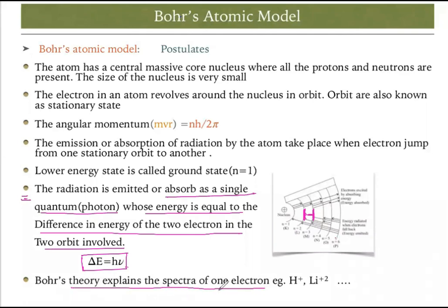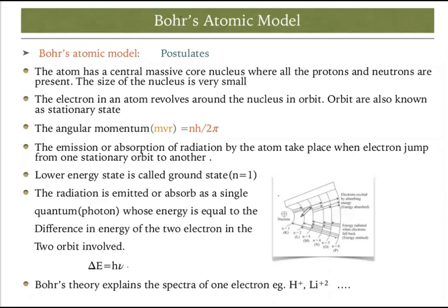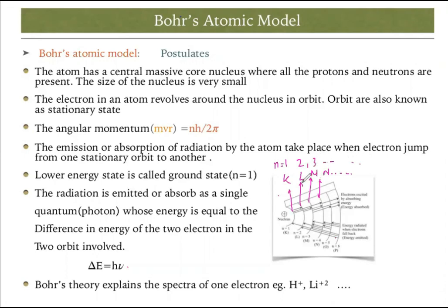Bohr's theory explains the spectral lines of one-electron systems, for example He⁺ and Li²⁺ — both have one electron. Bohr also described different types of shells: the first shell is K, the second is L, the third is M, the fourth is N, and so on. These shells are represented by the principal quantum number n: n=1 is K, n=2 is L, n=3 is M, and so on.